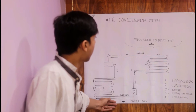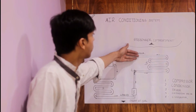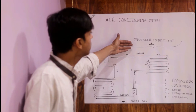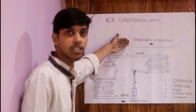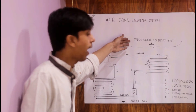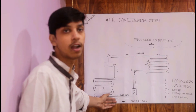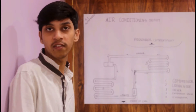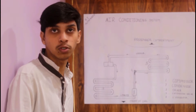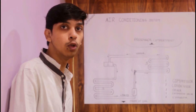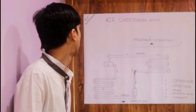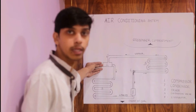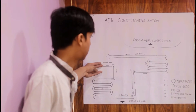This is the front of the car and this one is the rear of the car — this is the passenger compartment and this is the front of the car. Basically a refrigerant is used for the cooling. The first component is the compressor.